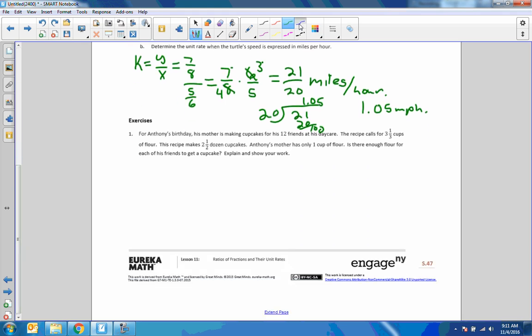Exercise. For Anthony's birthday, his mother is making cupcakes for 12 friends at his daycare. The recipe calls for 3 and 1/3 cups. First thing I'm going to do is make that improper, which is 3 times 3 plus 1, 9 plus 1, 10 thirds cups of flour. The recipe makes 2 and 1/2 dozen. Change that to 2 times 2 is 4 plus 1 is 5 halves dozen cupcakes. Anthony's mother only has 1 cup of flour. Is there enough flour for each of the friends to get a cupcake?